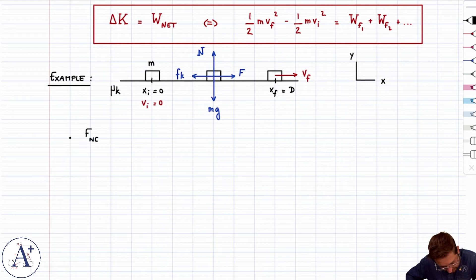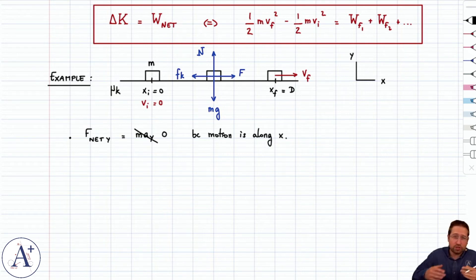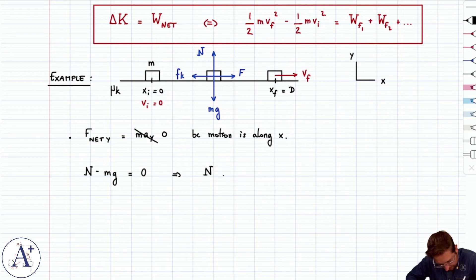The way I'm going to do that is I'm going to write that F net y is equal to, well technically it should be m a y, but that's really zero because the motion is along x, or in other words there is no motion in the y direction, therefore no acceleration in the y direction. And if F net y is zero, then I get n minus mg is equal to zero, which implies that capital N is mg.